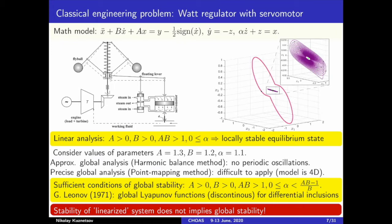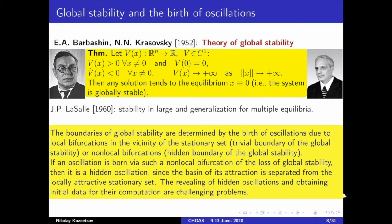Only in 1971, Gennady Leonov obtained sufficient conditions of global stability for this model via the Barbashin-Krasovsky approach. In this case, stability of the linearized system does not imply global stability and there is a gap between necessary and sufficient conditions. In 1952, Barbashin and Krasovsky generalized ideas of Lyapunov for the study of global stability and suggested a criterion of global stability based on using global Lyapunov functions. Later, these ideas were developed by LaSalle and others.